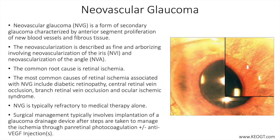The glaucoma drainage device of choice is typically the Ahmed valve, the FP7 model, since IOP is usually extremely elevated and prompt lowering of pressure is needed. Trabeculectomy surgery has a very high failure rate in these eyes and is not considered standard of care. Novel devices such as MIGS implants or goniotomy are not appropriate in these eyes due to angle pathology.